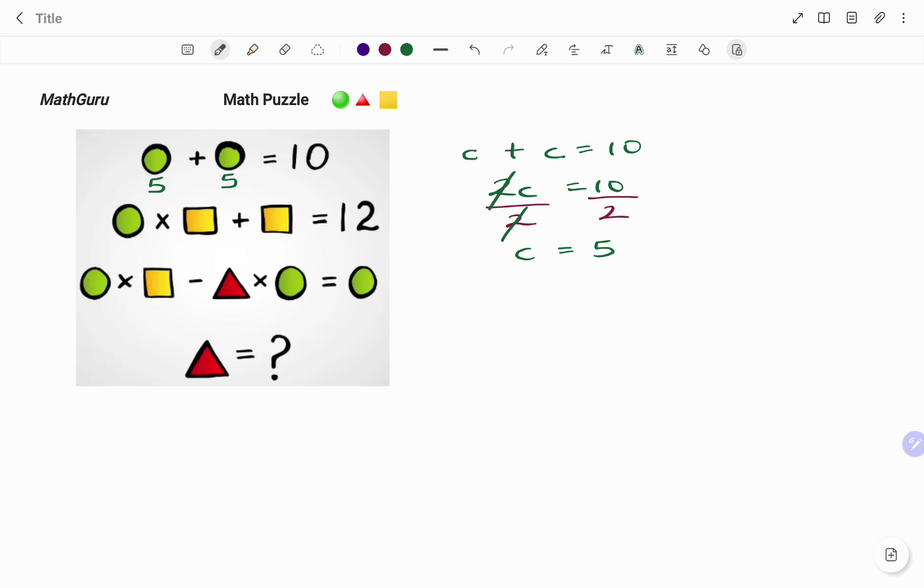The next line I have a circle times a square plus another square. I'm going to rewrite that like I did earlier. My circle I use C to represent the circle, times the square I use my S, plus S equals to 12.